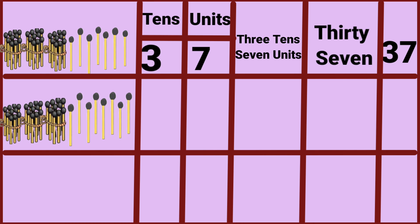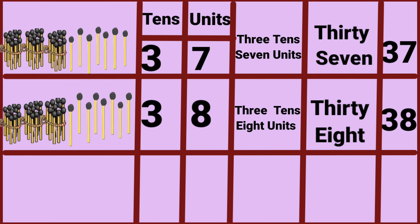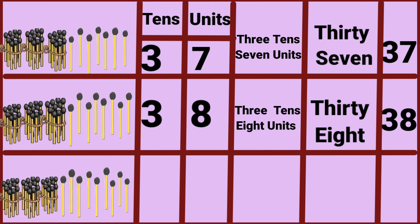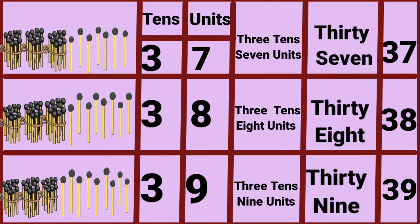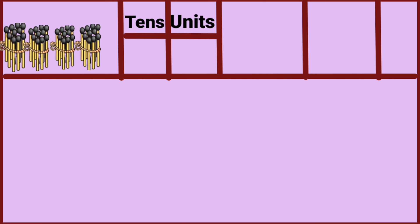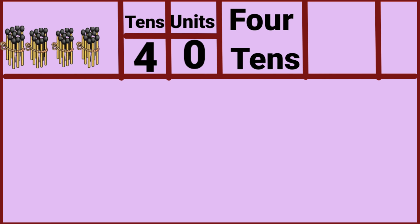Three tens, eight units — thirty-eight. Three tens, nine units — thirty-nine. Four tens, zero units — forty.